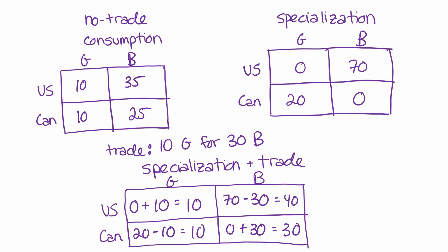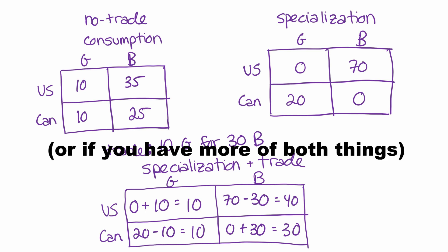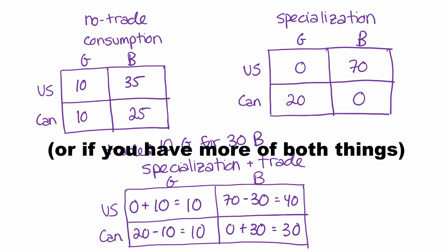And so that presents a very clear situation. If you have more of one thing, and you have the same amount of the other thing as before, you can conclude that you're better off without having to know how much you value guns versus butter.